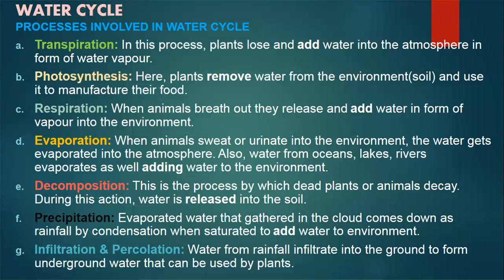Water circle: Processes involved include: C. Respiration — when animals breathe out, they release and add water in the form of water vapor into the environment. D. Evaporation — when animals sweat or urinate into the environment, the water gets evaporated into the atmosphere. Also, water from oceans, lakes, and rivers evaporates as well, adding water to the environment.